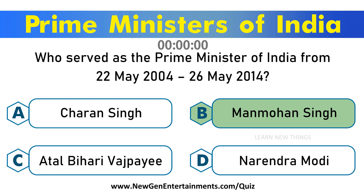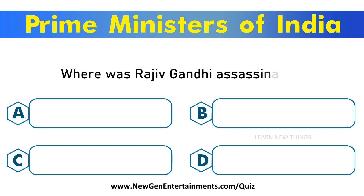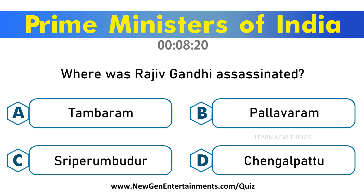Where was Rajiv Gandhi assassinated? Options are A. Tambaram, B. Pallavaram, C. Sriperumbudur, D. Chengalpat. Answer is Option C. Sriperumbudur.